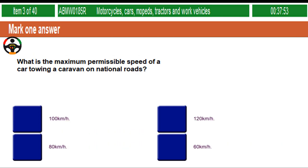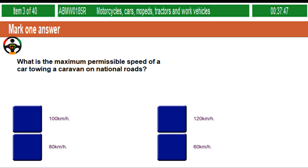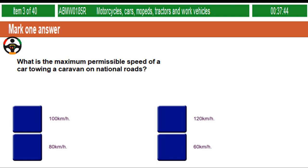What is the maximum permissible speed of a car towing a caravan on national roads? 100 kilometres per hour. 120 kilometres per hour. 80 kilometres per hour. 60 kilometres per hour.